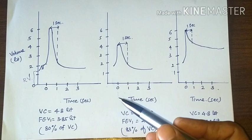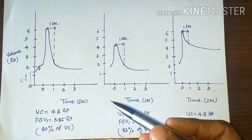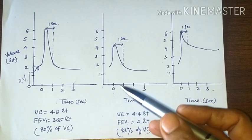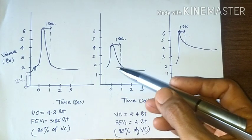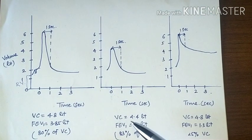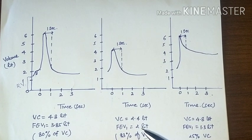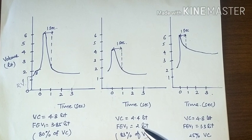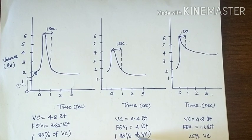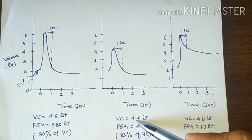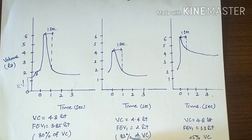What happens in restrictive lung diseases like kyphoscoliosis or fibrosis? Here, because of restriction, vital capacity or forced vital capacity itself is reduced. You can see here it becomes 2.4 liters only. And FEV1, although it is also reduced, you can see here 2 liters, this FEV1 is 80% of the reduced vital capacity. So you can say that FEV1 percentage is normal.